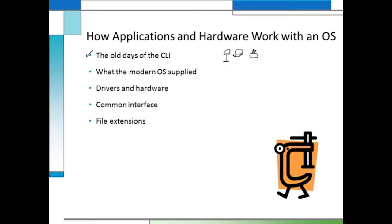Basically, you're interacting with the operating system that is in control of the functions of what the computer does. Part of that control means working with different peripherals — hardware devices we attach to a computer, like a printer, a mouse, or keyboards. When we started this work, we needed a way to physically implement commands, to take our actions and have the hardware carry them out through the operating system.